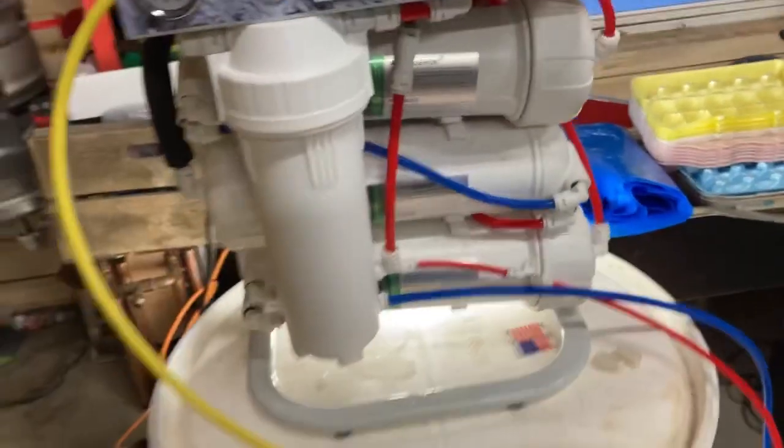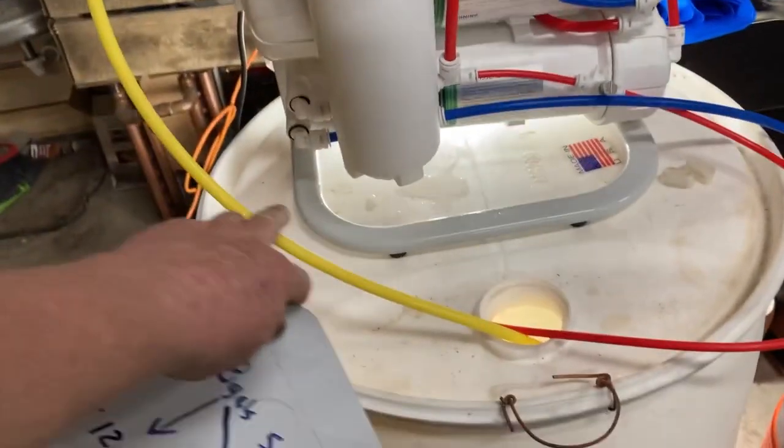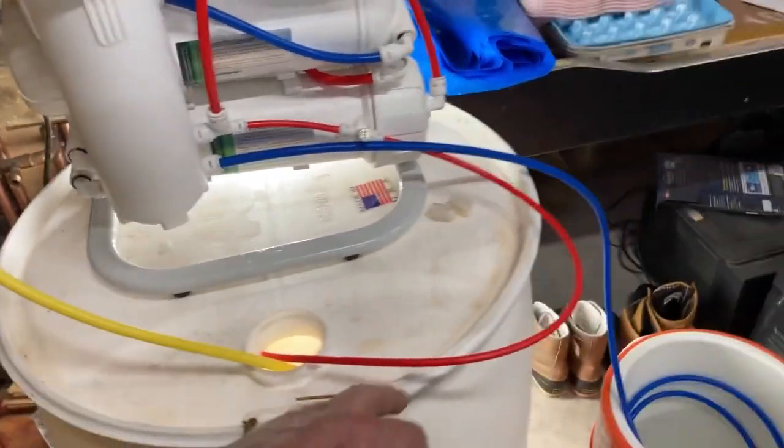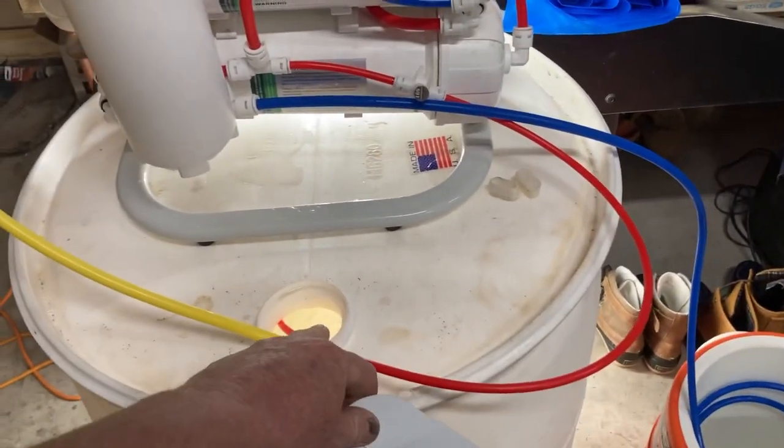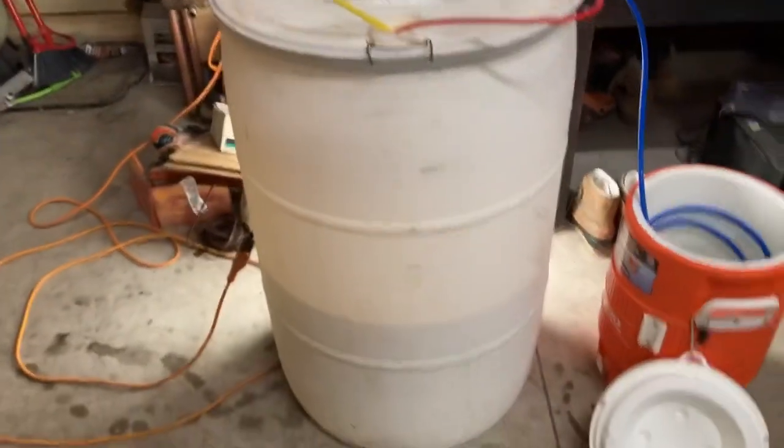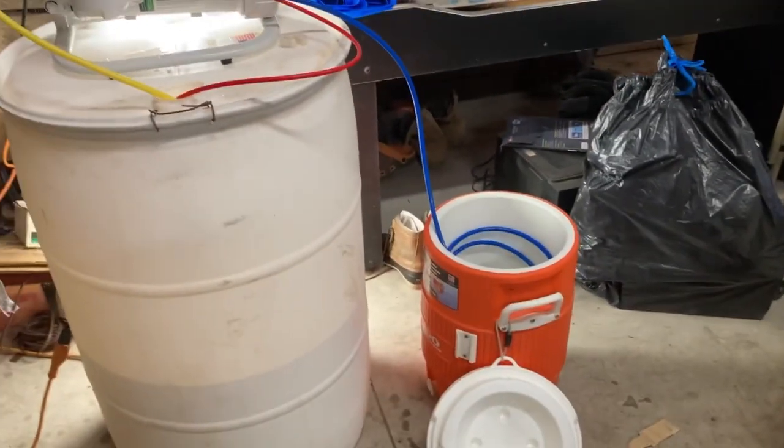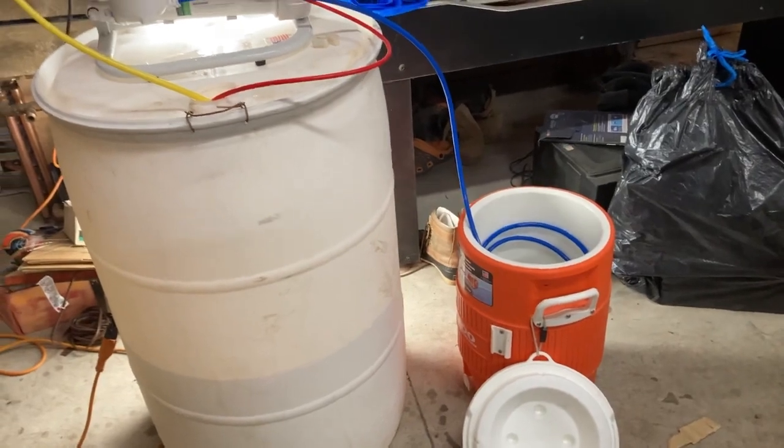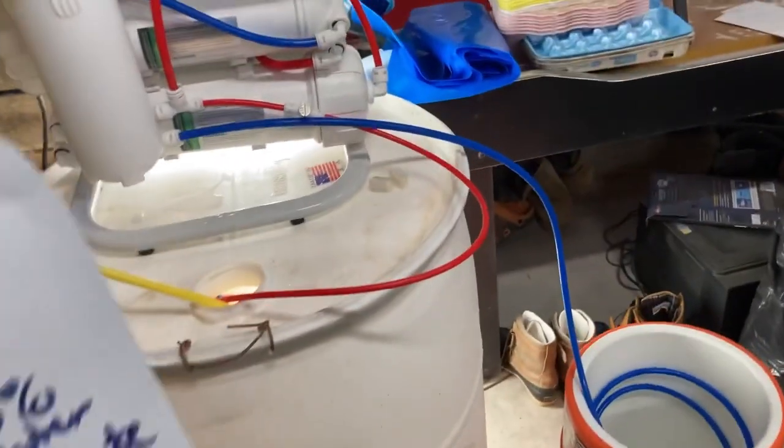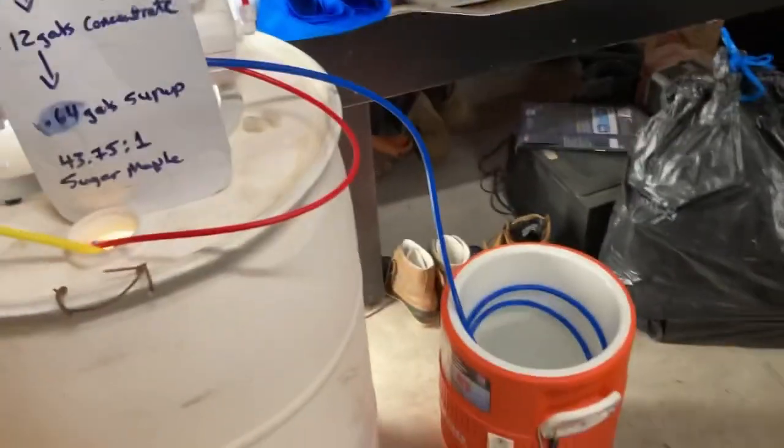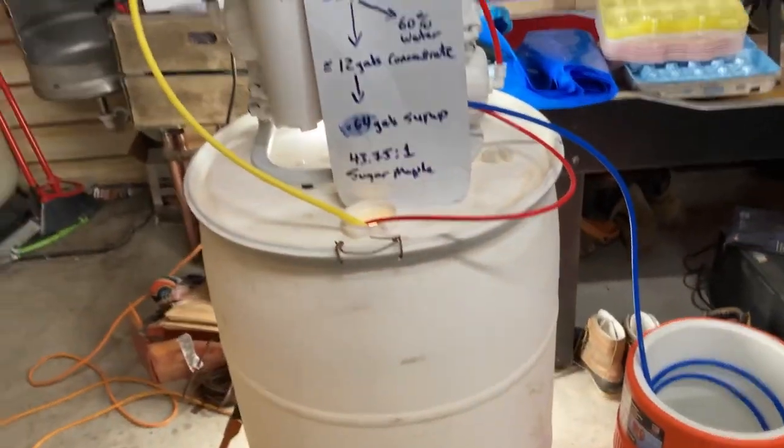But what we're doing here is this is our inlet line with a filter on the end. This is our concentrated sap line going back into the barrel. And then this is our purified water that we're going to keep. I actually kept 110 gallons of it last year because it's good for making ice and drinking water. It's amazing. The kids will take that purified water over a pot.